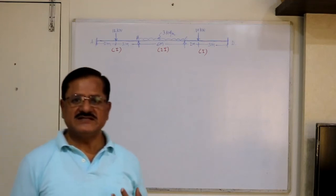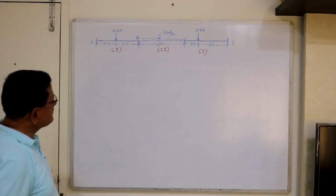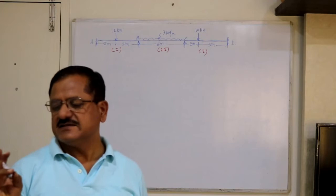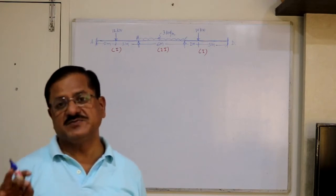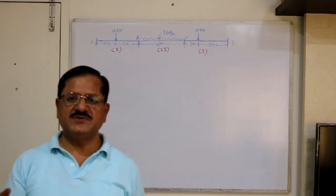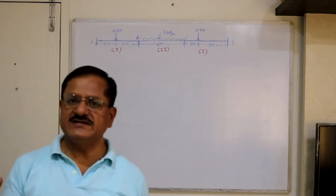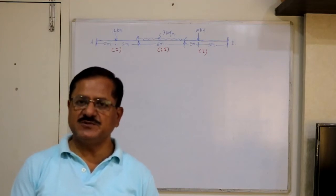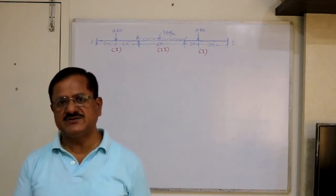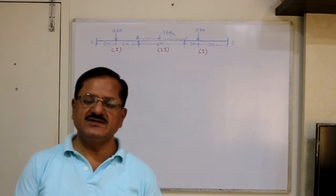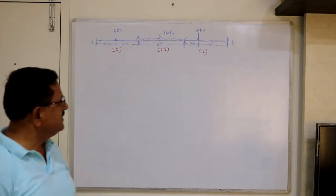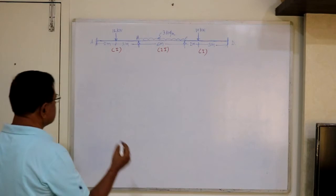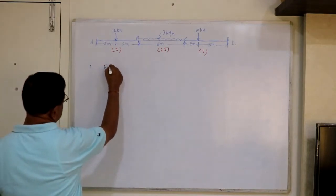In my opinion, it is only a three-step problem. First, find the fixed end moments using standard formulas. Second, find the distribution factors. Third, prepare the moment distribution table — and that's it. At the end of the table you automatically get the final moments. Once you know the moments, you construct a bending moment diagram, and if required, a shear force diagram by using equilibrium conditions to find reactions.